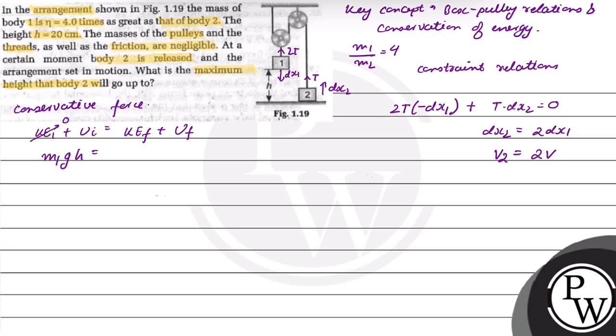Kinetic energy final for box 2 will be ½m₂(2v)² plus kinetic energy of box 1 will be ½m₁v² plus final potential energy. Box 2 will be at distance 2h because x₂ = 2dx₁, so potential energy final will be m₂g(2h).